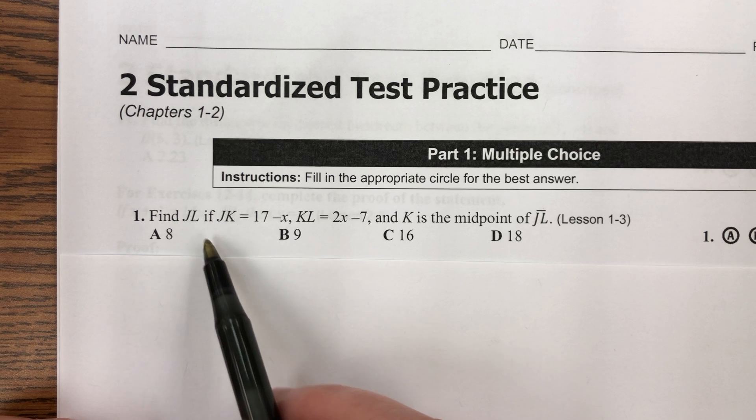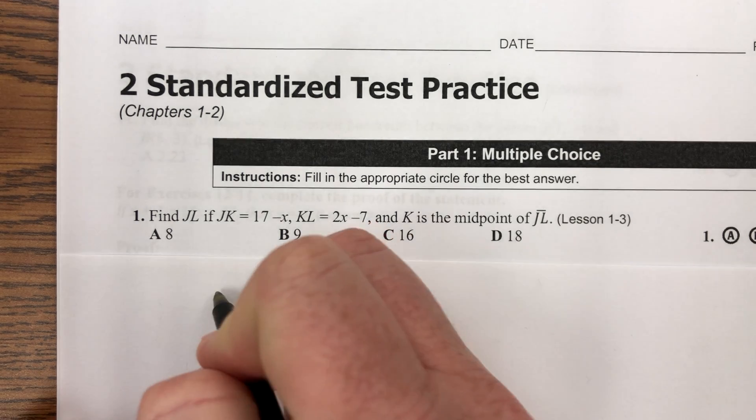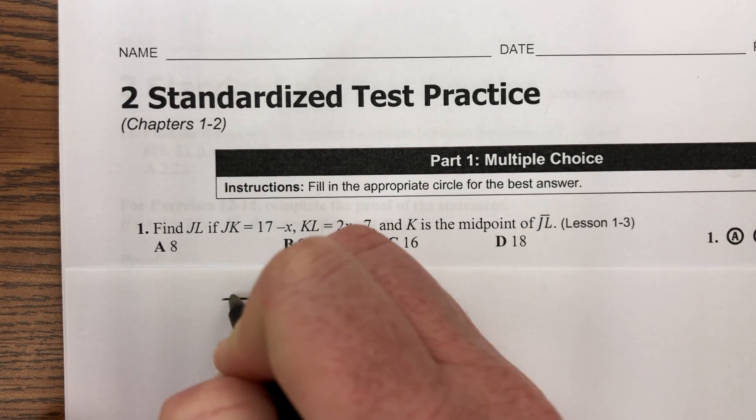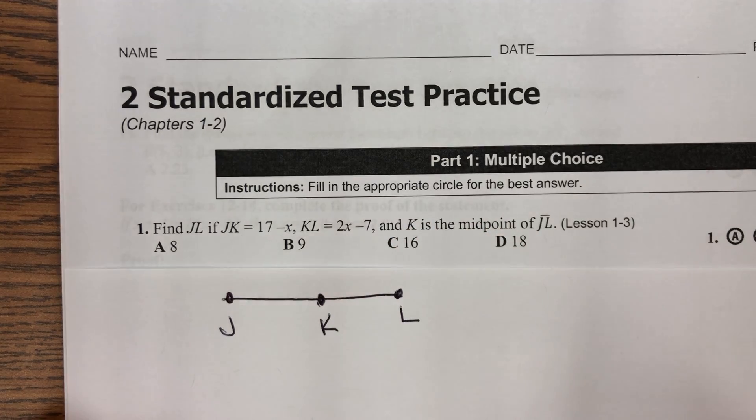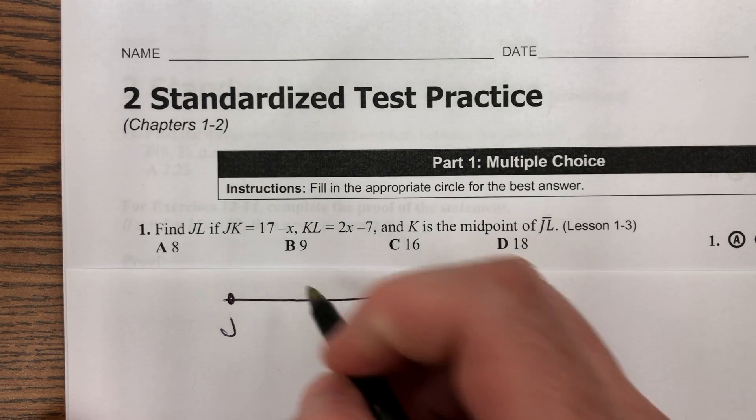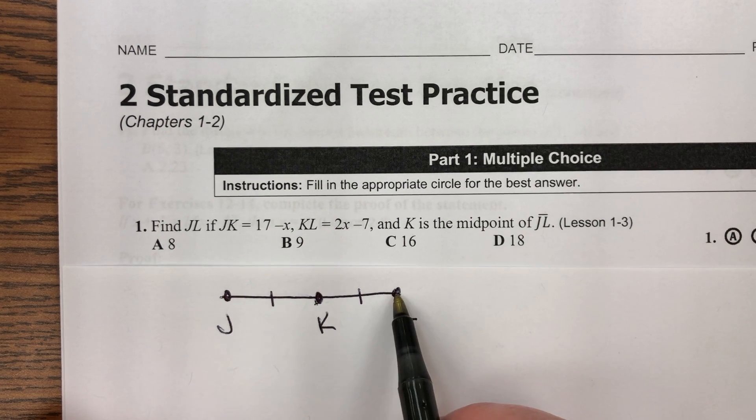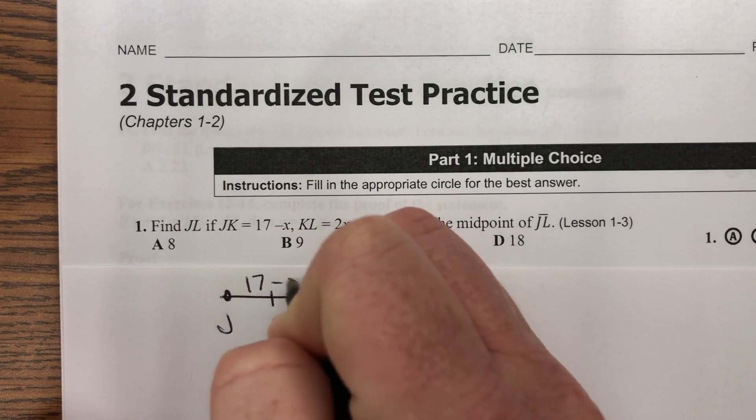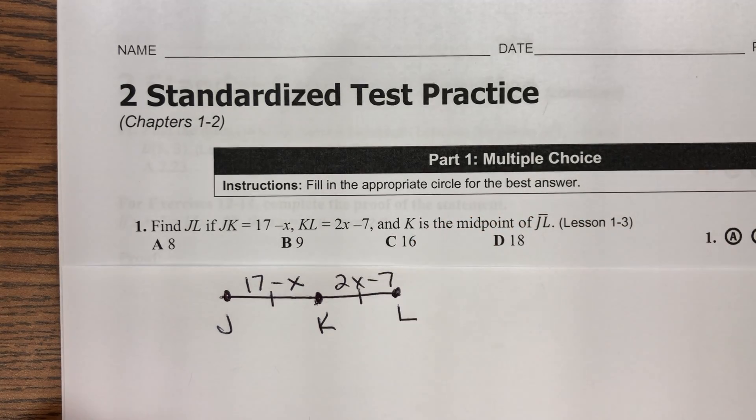All right, so we have these eight problems, actually seven, because I took one out. Number one, find JL if JK is 17 minus X, KL is 2X minus 7, and K is the midpoint of JL. So if I have a line segment J to L, and right here in the middle is K, first thing I know is that the midpoint of a line segment separates that segment into two smaller congruent segments. So JK is the same size as KL, and I have to based on that information find the length of this entire line segment.